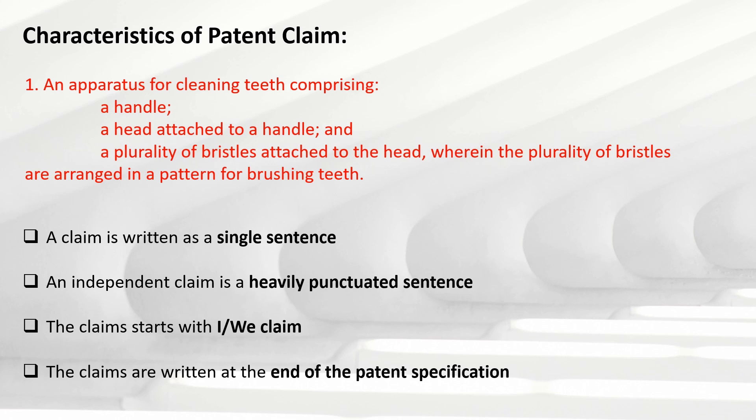The fourth characteristic states that claims are written at the end of the patent specification. Whenever you read a patent specification, the claims are always written at the end. These are the characteristics, or rules, for a written claim.